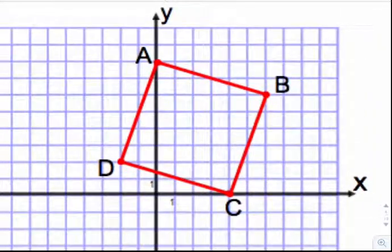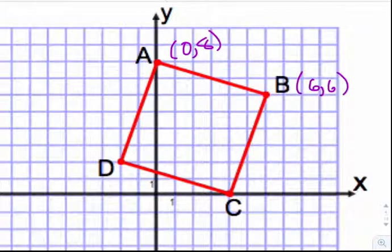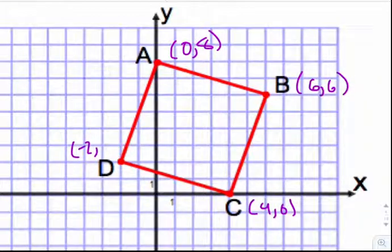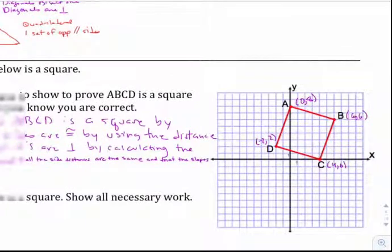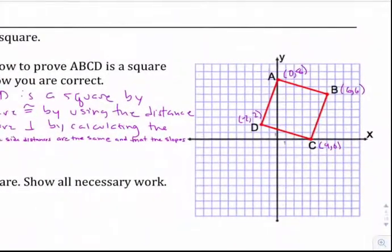Let's find the coordinates from the graph and record them. So A is at (0, 8), B is at (6, 6), C is at (4, 0), and D is at (-2, 2). Now the one thing you don't want to do is just count on the grid and call that work — you're going to have to perform a calculation. You're just going to have to show it; there's no way around it.